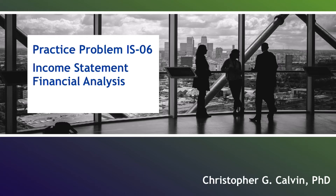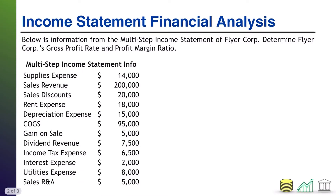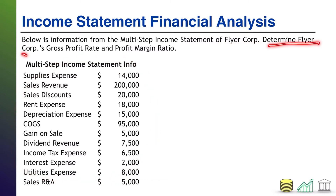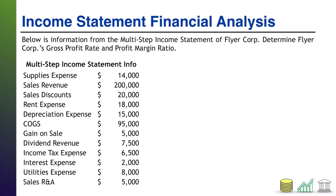Hi, everyone. Welcome to Practice Problem ISO 6. This one's going to be about performing financial statement analyses on the multi-step income statement. Here you are given a bunch of information from the multi-step income statement of FlyerCore. The question is asking you to determine FlyerCore's gross profit rate and profit margin ratio.